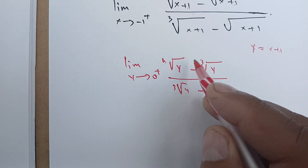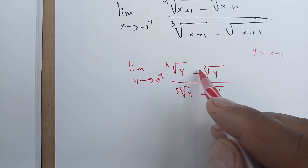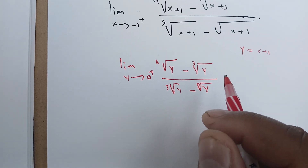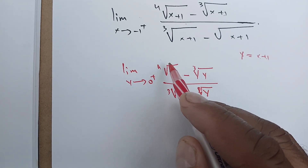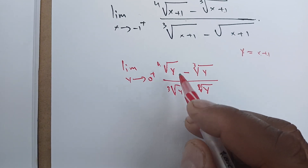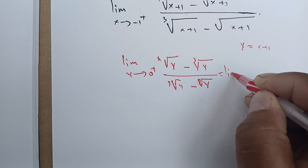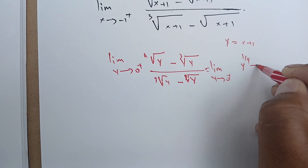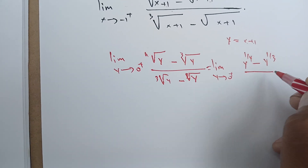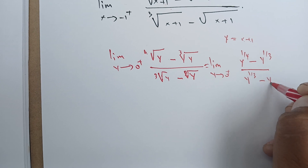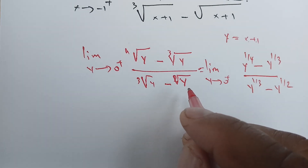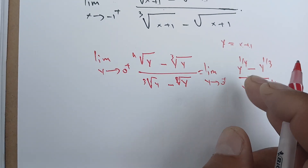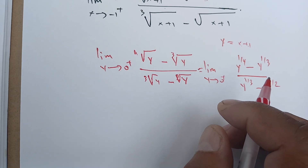For these kinds of problems, we try to factor out and see what we can eliminate. In our case, we're going to factor out y to the power one-quarter from the numerator, because we can write everything using powers notation in that form. Let's factor out y^(1/4) from the top and see what we get.